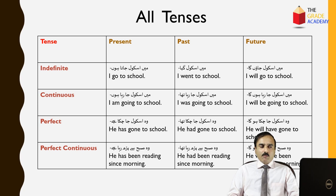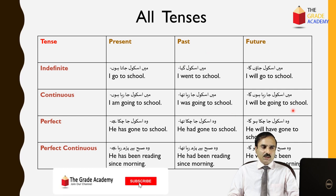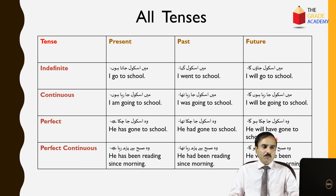The tenses are 12. There are three main tenses — present tense, past tense, and future tense — and four types: indefinite, continuous, perfect, and perfect continuous. So we get: present indefinite, past indefinite, future indefinite; present continuous, past continuous, future continuous; present perfect, past perfect, future perfect; present perfect continuous, past perfect continuous, and future perfect continuous tense.